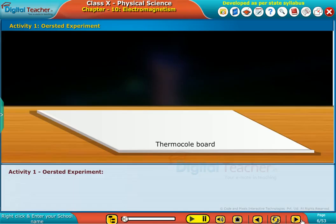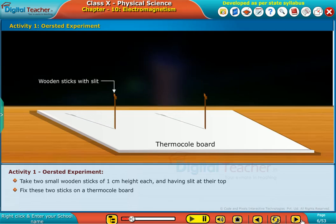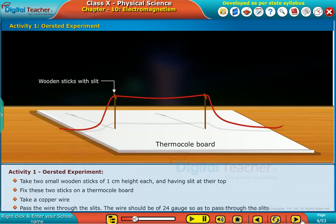Now, let us perform the Oersted experiment. Take two small wooden sticks of 1 cm height each and having a slit at their top. Fix these two sticks on a thermocol board. Take a copper wire and pass the wire through the slits. The wire should be of 24 gauge so as to pass through the slit.